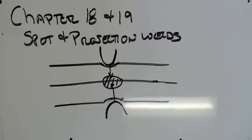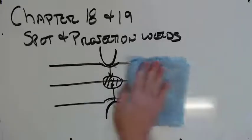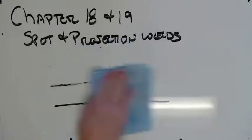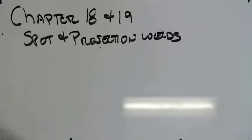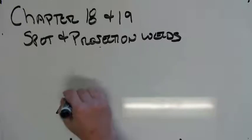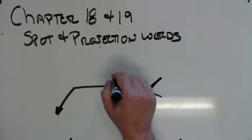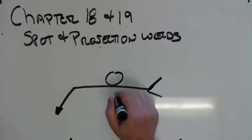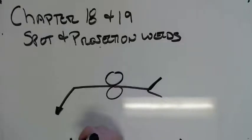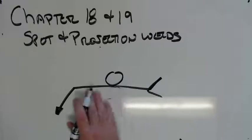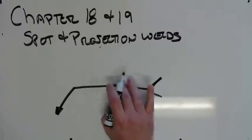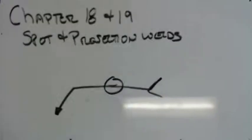So let's talk about the symbology. So spot welds do have arrow side, other side application. So you can have arrow side or other side, and the symbol for a spot weld is just a circle. You always have a tail. So it's either going to be other side, arrow side, or if it doesn't matter, it'll be just like that. But you always have a tail.